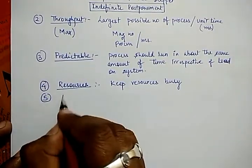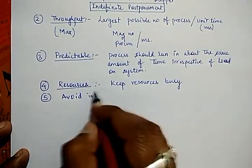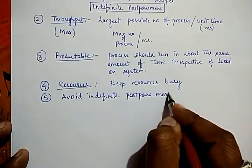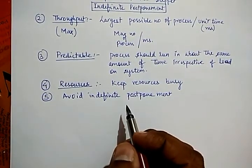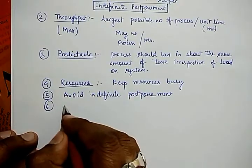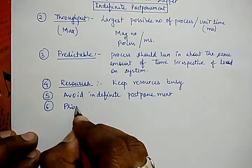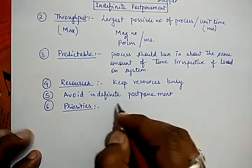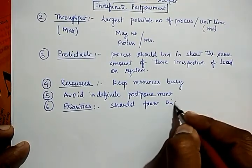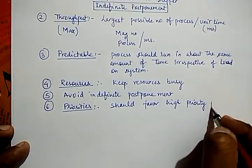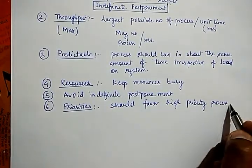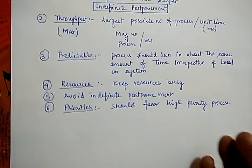Next is avoid indefinite postponement — that no process should be postponed for an indefinite amount of time. Number six says that if priorities are assigned to the processes, then the system should favor high priority processes, and they must be executed before all the other lower priority processes.